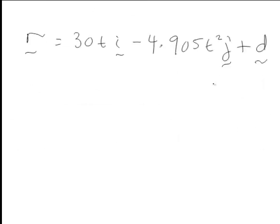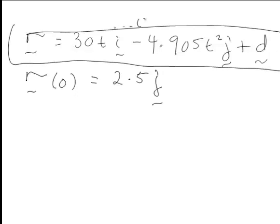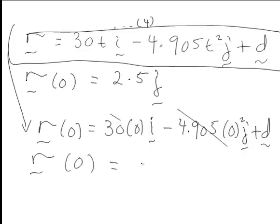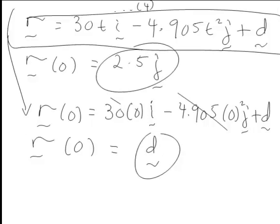We were told in the question that the ball was served from a vertical distance 2.5 metres above the ground, therefore r0 is going to be 2.5j since we're talking about height above the ground. In our equation for r, if we call that equation 4, if we substitute t equals 0 into that we get r0 equal to d. So equating the right hand side of these two expressions for r0 tells us that the constant vector d is 2.5j.